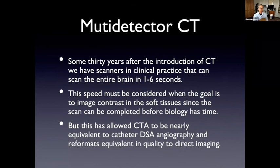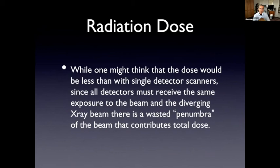So now where does that bring us to? That brings us to multi-detector scanners. So now we can scan the entire brain in anywhere from one to six seconds. And this speed has to be considered when we're imaging soft tissue, because you can finish the scan before there's time for the contrast to get into the soft tissues. But this has allowed CTA to be acquired when it's done well, to be very close to catheter DSA angiography. And it allows us to do reformats that are equivalent to the source images.